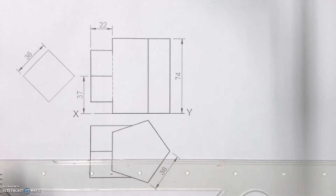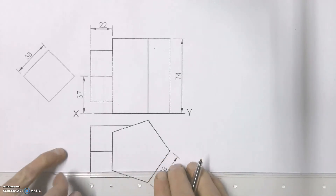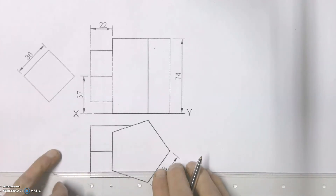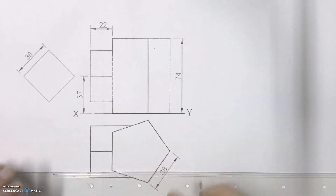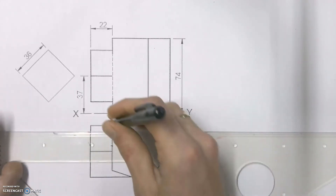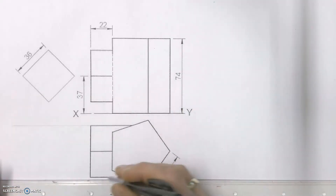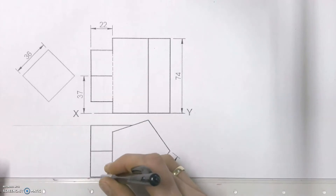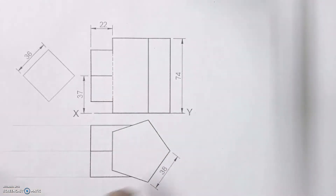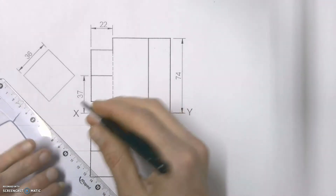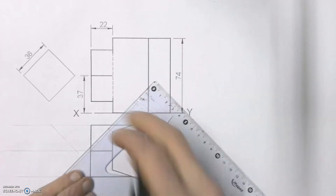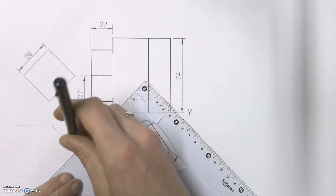To start us off we need to go and draw another auxiliary view here in the top view. We've got one that's given to us there already. We need the second one over here to be able to get the interpenetration curve. To do that I'm just going to project my already given lines across and then use my 45 degree set square to draw out in construction that auxiliary view.